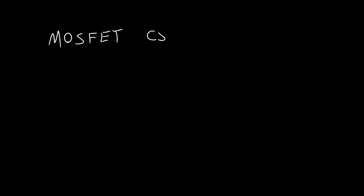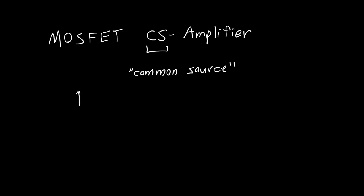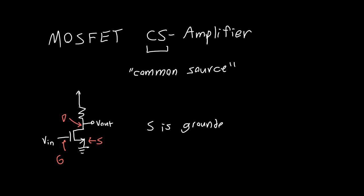In this video I'm going to talk about the MOSFET common source amplifier, or CS for short. What is a common source amplifier and why do we use this terminology? The common source amplifier is going to look something like this — you have some input voltage, some output voltage, and the three terminals of the transistor are connected with the drain up top, the gate in the middle, and the source at the bottom. Because the source is grounded, we say that it is the common terminal.